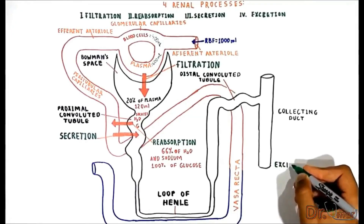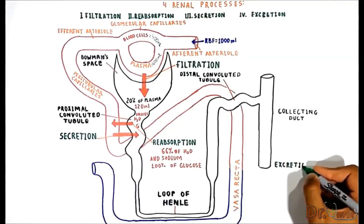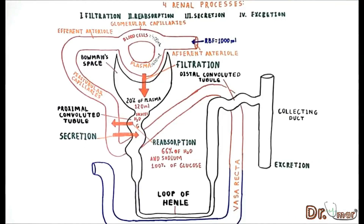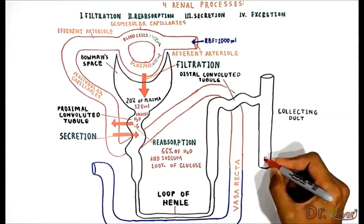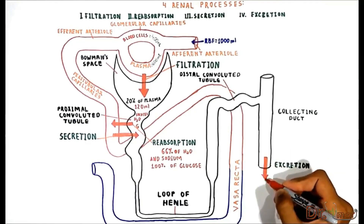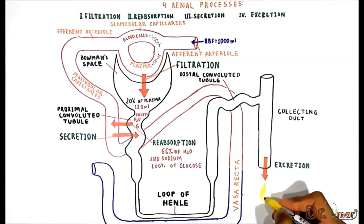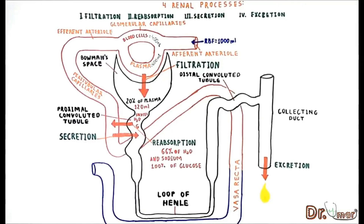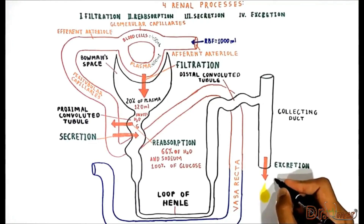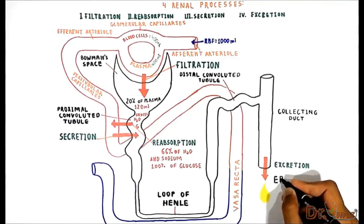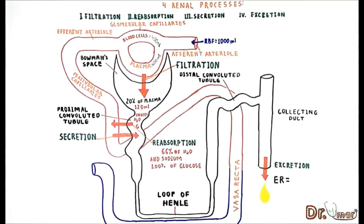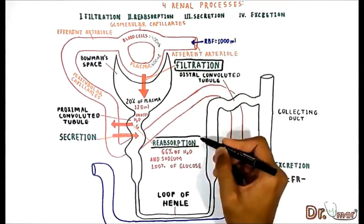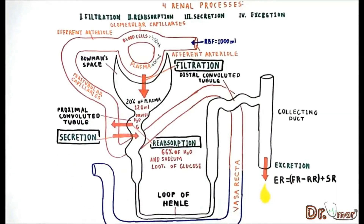Finally, the last step is excretion. Excretion is the process by which fluid and dissolved substances are lost in the urine. A substance that is filtered and not completely reabsorbed is excreted in the urine. The last important point is calculating the excretion rate, which is very simple: excretion rate equals filtration rate minus reabsorption rate plus secretion rate.